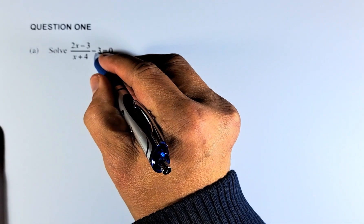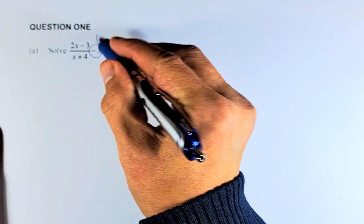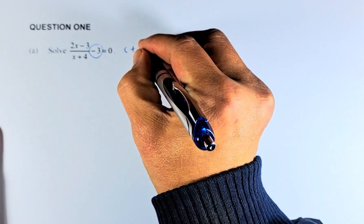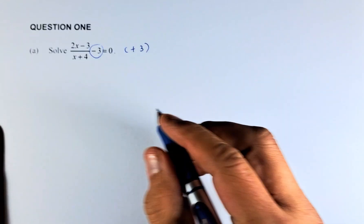So first, you need to get rid of this minus 3. To get rid of minus 3, you're going to add 3 on both sides of the equation. So when you add 3...